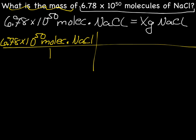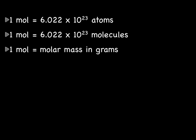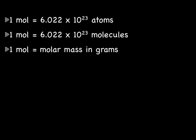Step 3 — this is where things get slightly tricky. We need to figure out which equality to use. We have molecules and grams in our problem. Looking at our equalities: the first one has moles and atoms — not what we want. The second has moles and molecules, and the last has moles and grams. Molecules and grams are not in the same equality, so it looks like we're going to have to use two equalities at the same time.